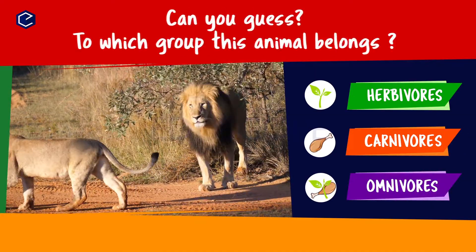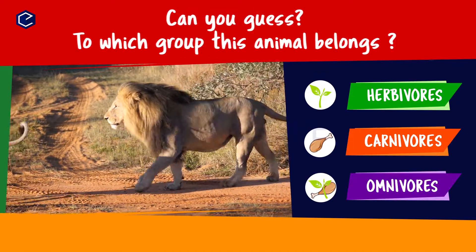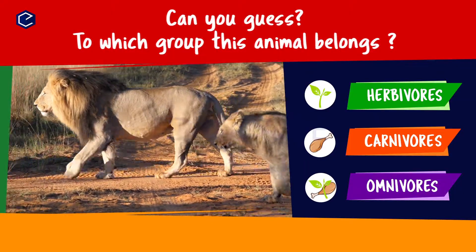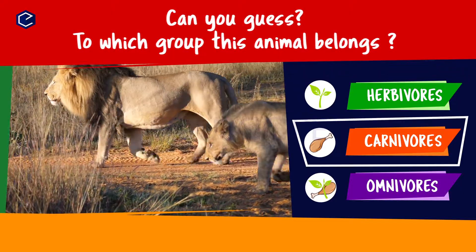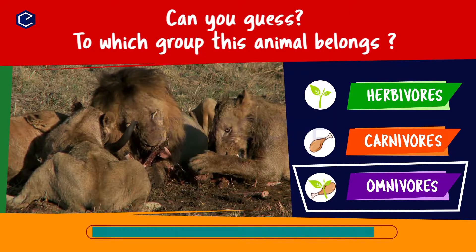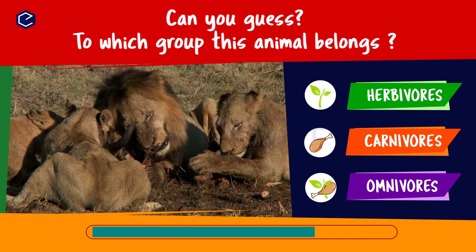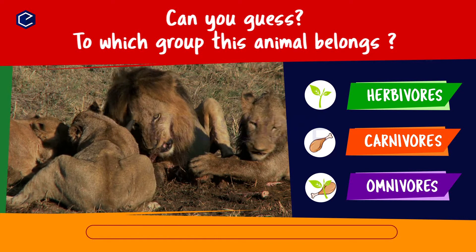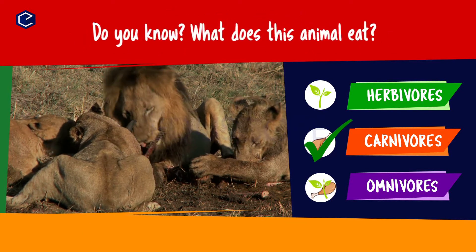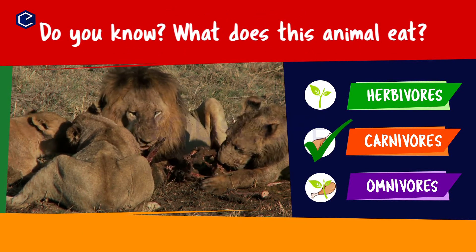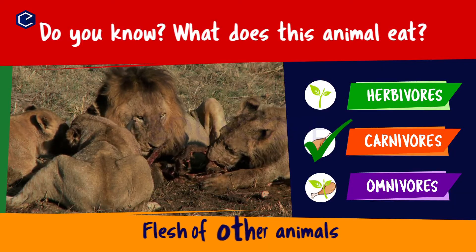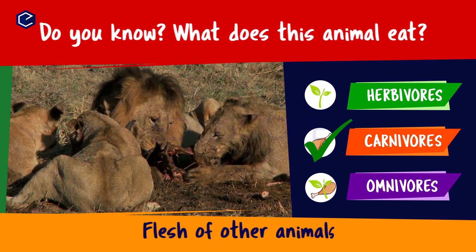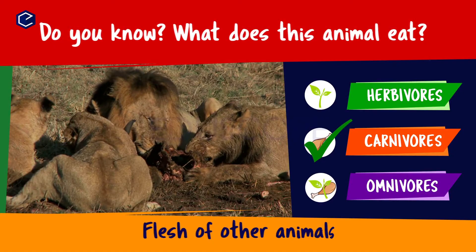Can you guess to which group this animal belongs? Herbivores, carnivores, omnivores. Do you know what this animal eats? A lion eats flesh of other animals. So lion is a carnivore.